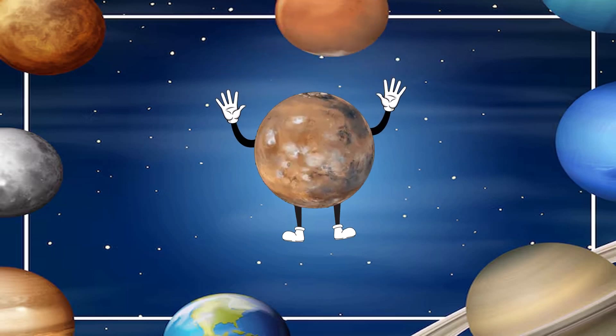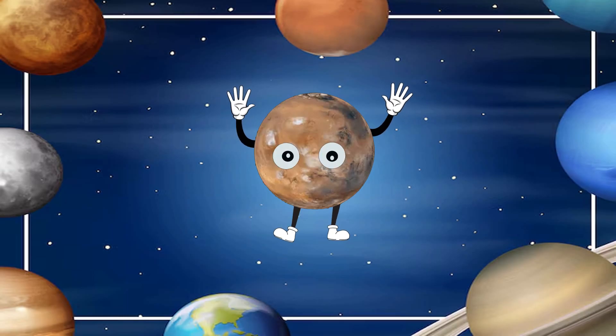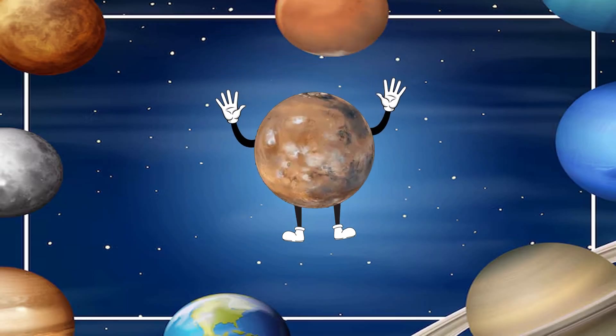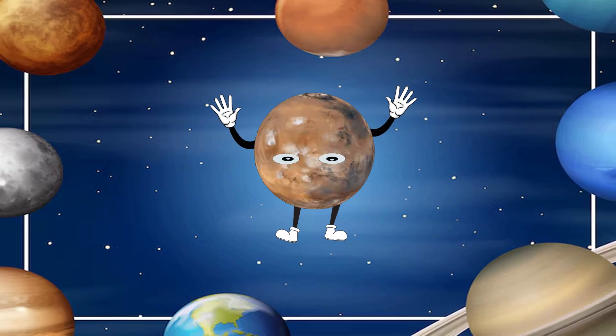There are eight planets in our solar system, we revolve around the sun. Join us to learn about the different planets, now sing along and have some fun.